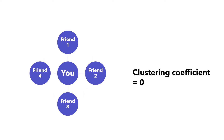On the other end of the spectrum, if the clustering coefficient is zero, then you are the only person who holds your friends together, as they do not interact with one another. Based on our life experience, social networks should be highly clustered and should have a high clustering coefficient. But how do we find evidence to support this?